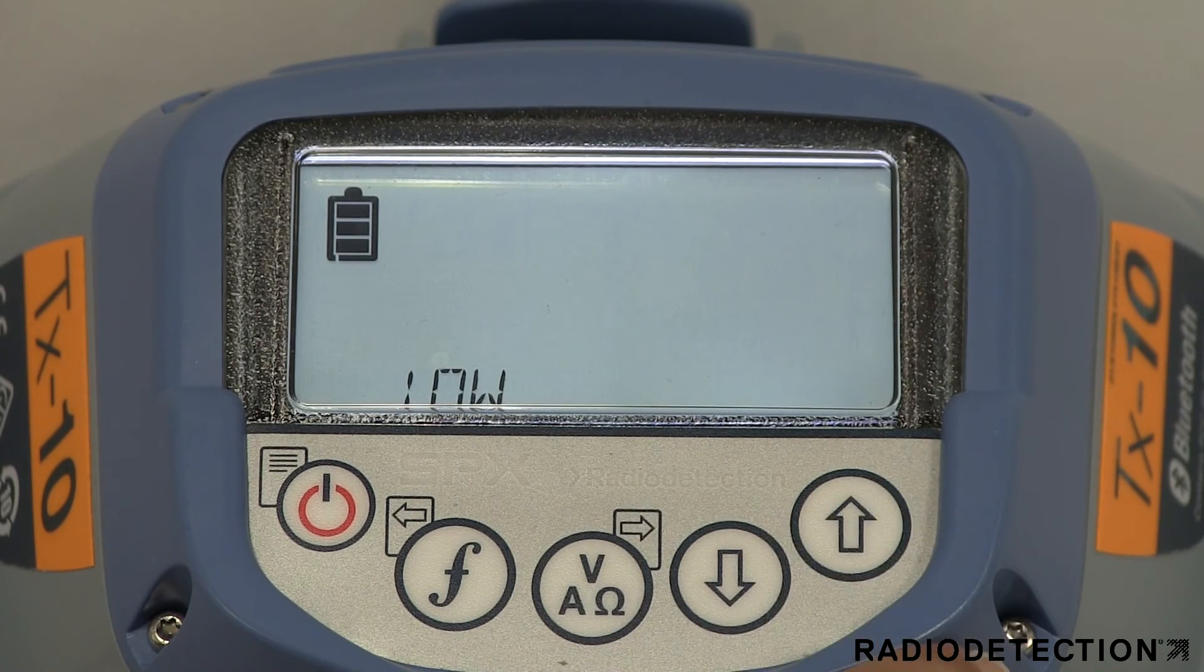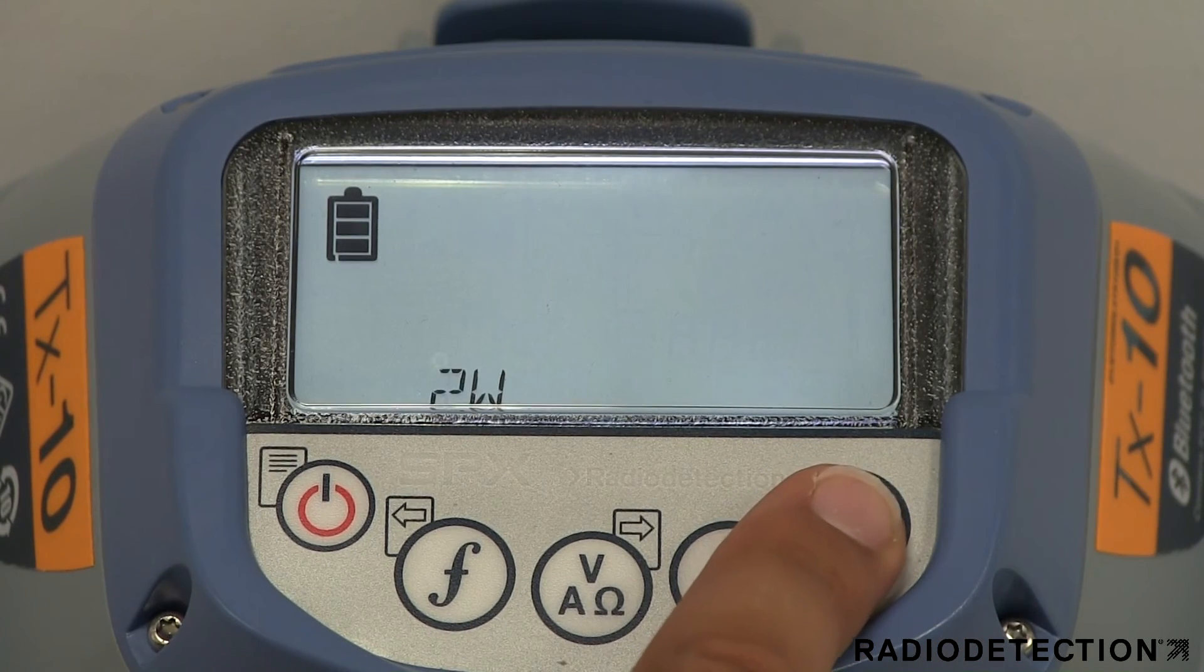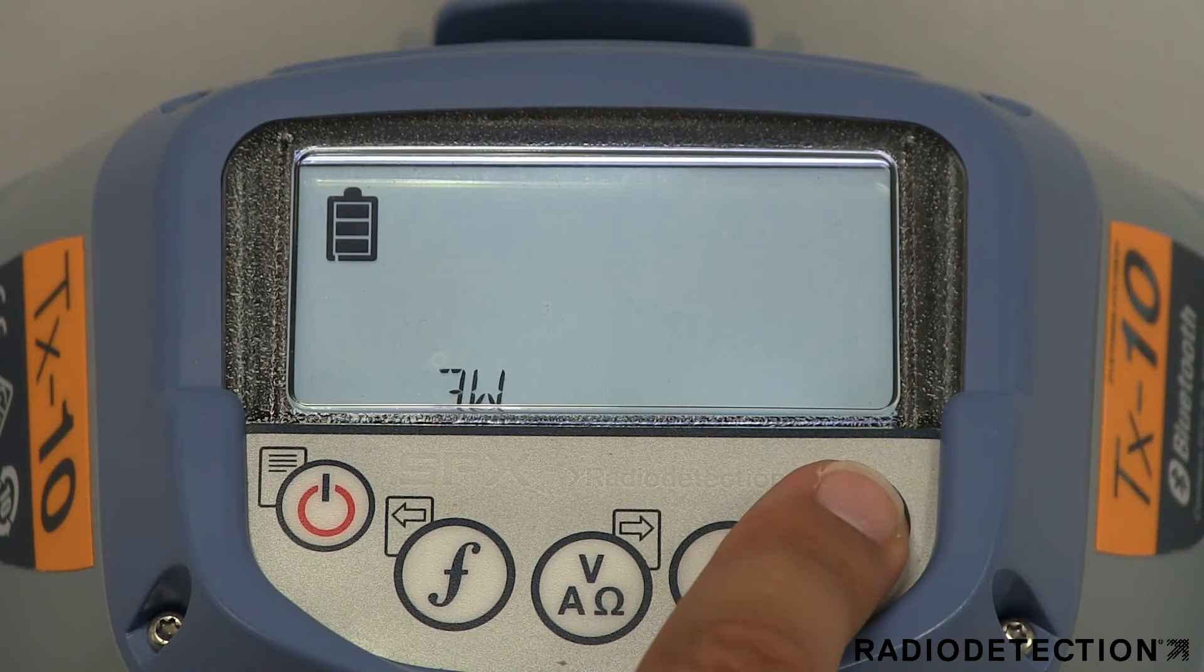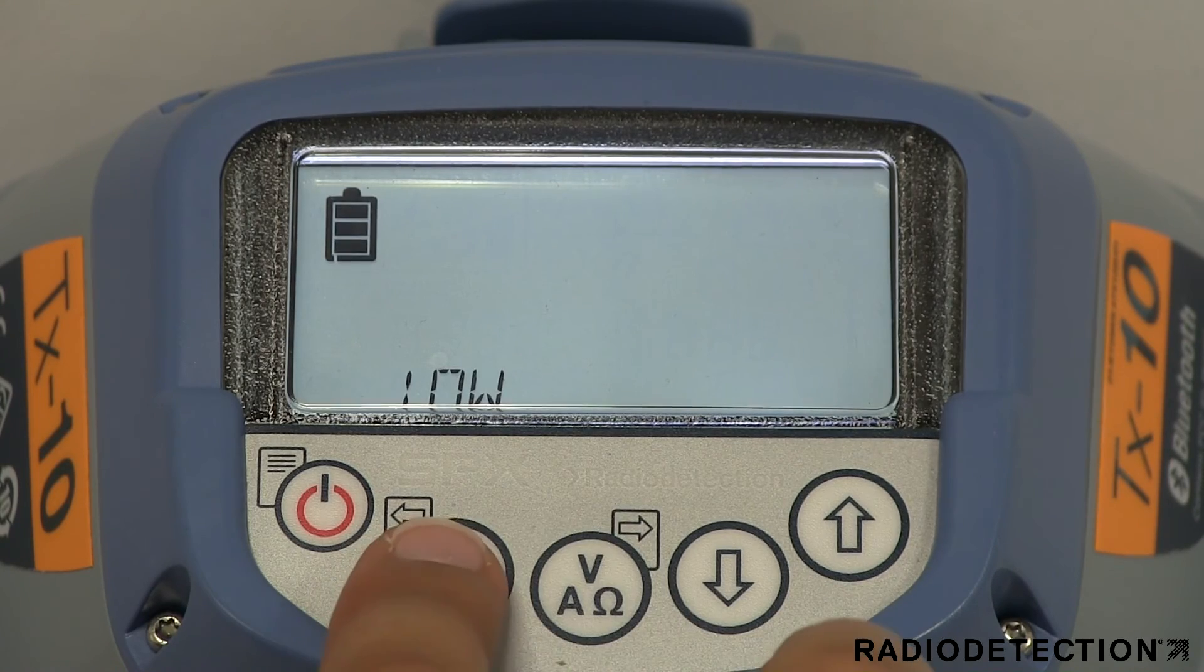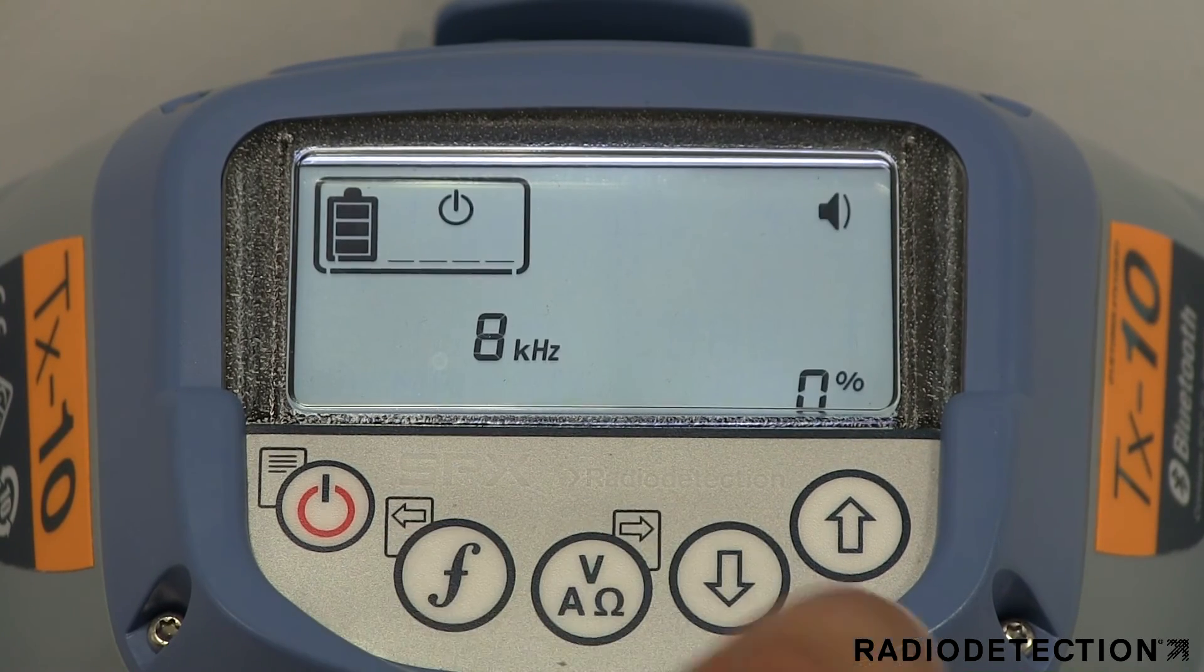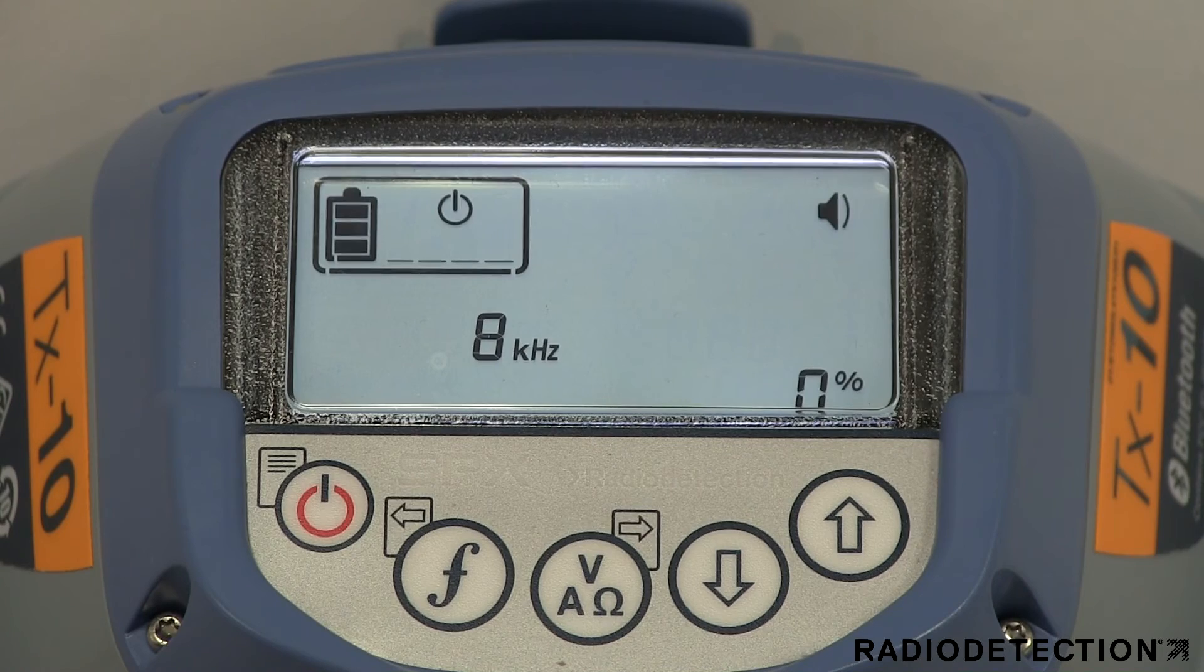The Max P menu option is used to set the maximum output power level of the transmitter. You can choose from 1 watt, 2 watts, 3 watts, 5 watts or 10 watts. This will limit the transmitter to the output level that you select. This can be a useful safety feature when training a new user.